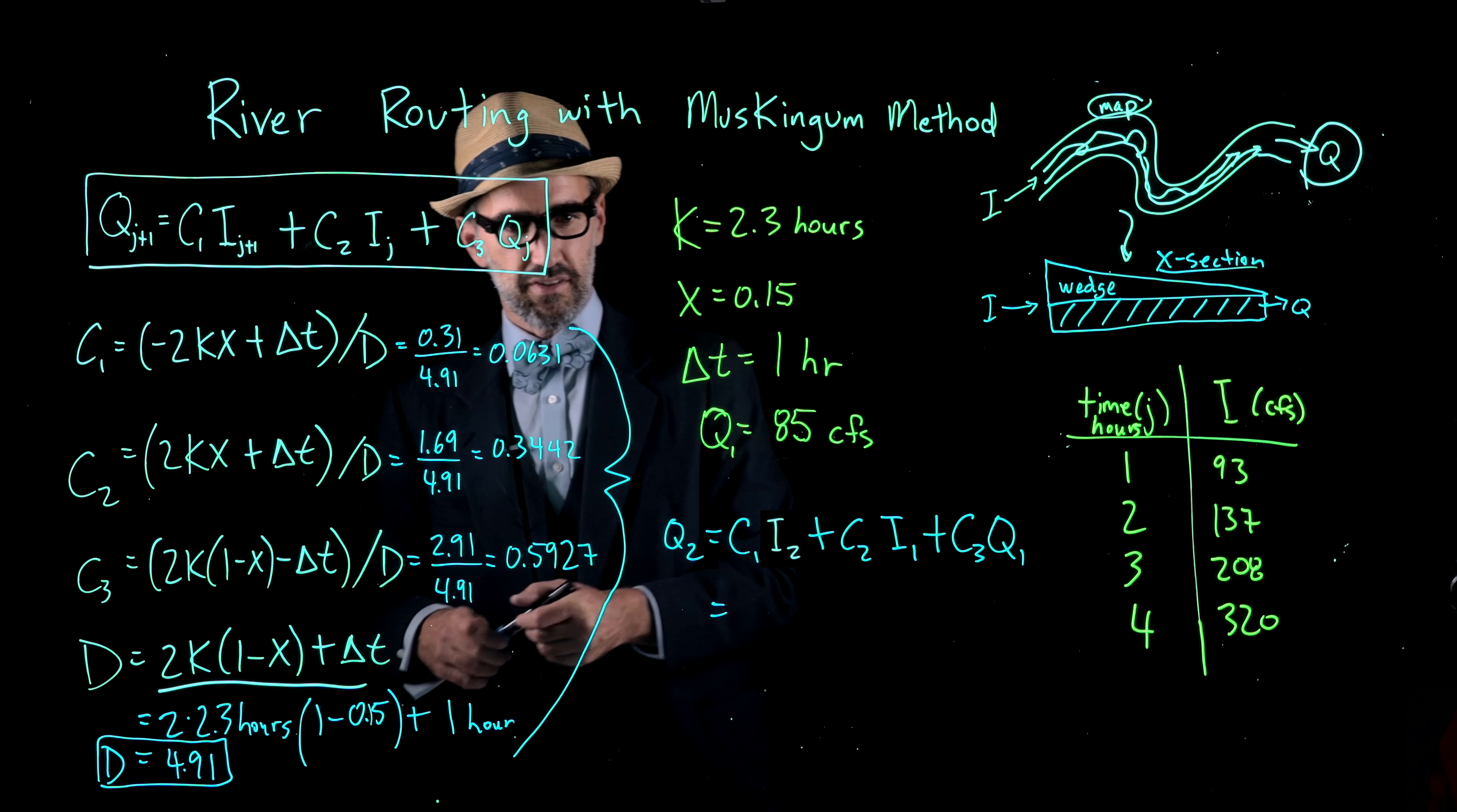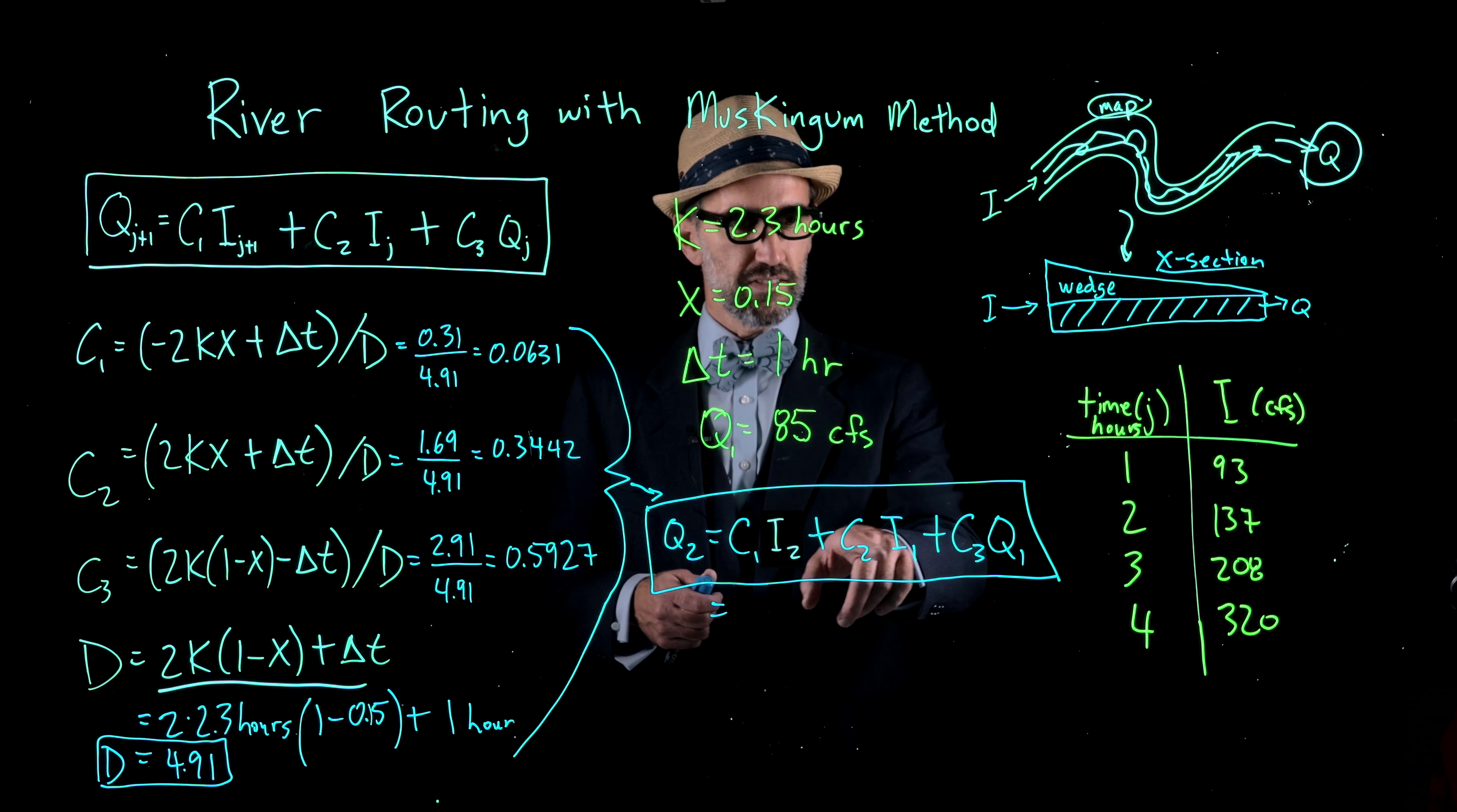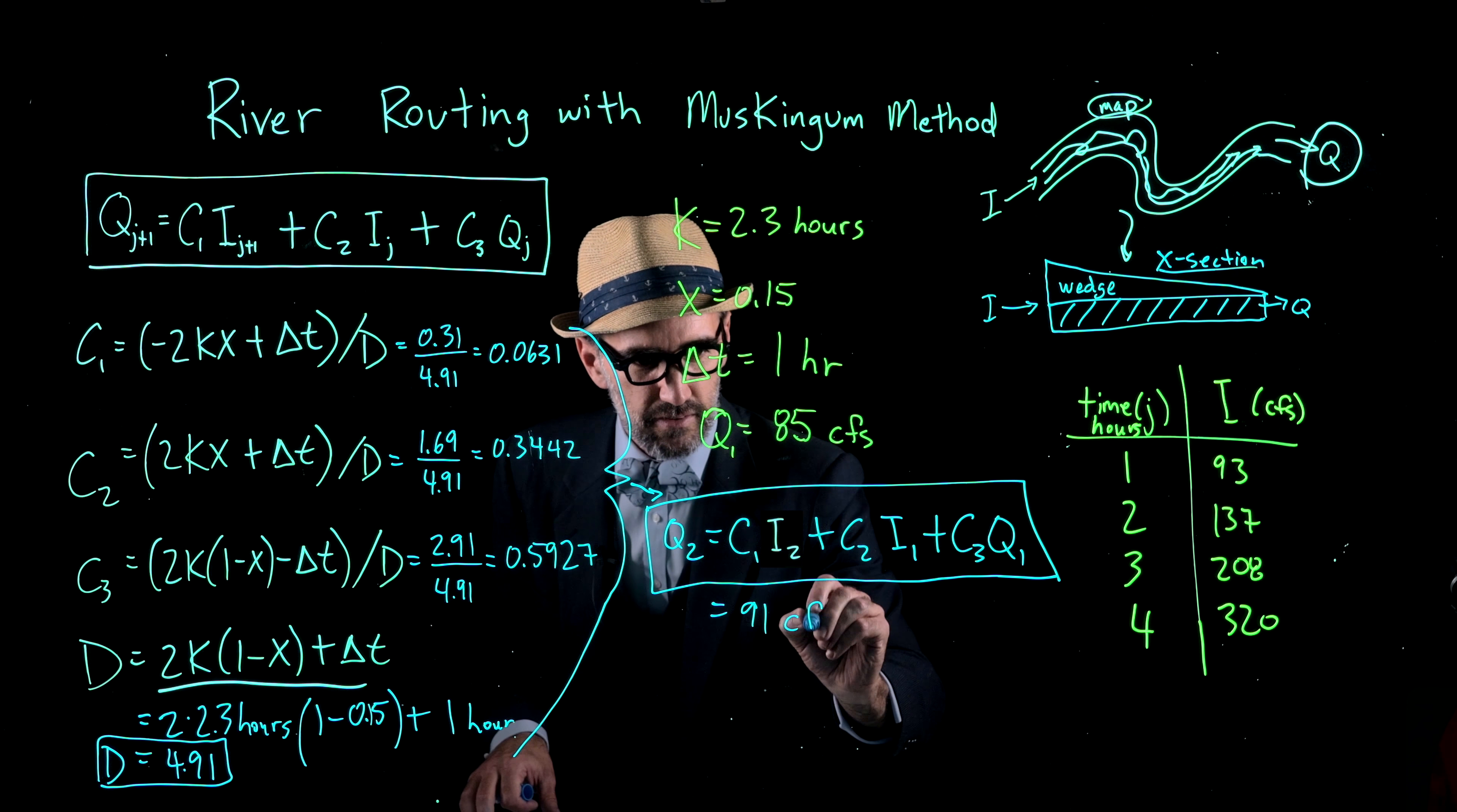Now we can substitute all of those into our Muskingum method equation for the time step Q2. Our Q2 equals C1 I2, C2 I1, C3 Q1. When we substitute these coefficients and the stream flows themselves, it is equal to 91 CFS.